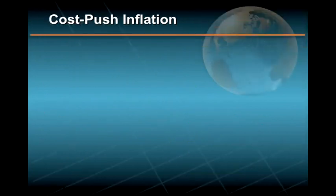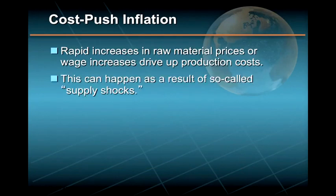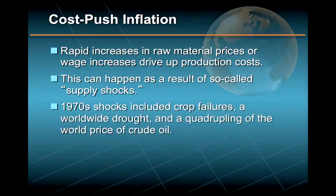Cost-push or supply-side inflation occurs when factors such as rapid increases in raw material prices or wage increases drive up production costs. This can happen as a result of so-called supply shocks, such as those experienced in the early 1970s, which included crop failures, a worldwide drought, and a quadrupling of the world price of crude oil.